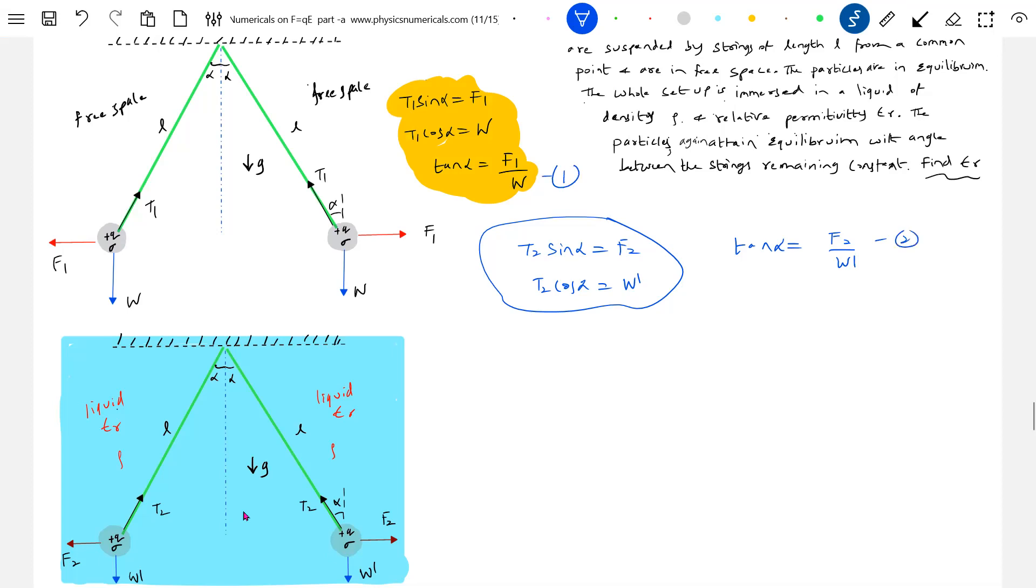Equating one and two, so I'll end up with F1 by W equals F2 by W dash. What is F1? What will be the separation? Since the length of the string and angle between the strings will remain the same, so the separation also will not change. Let it be X.